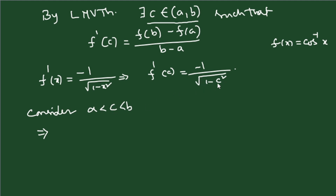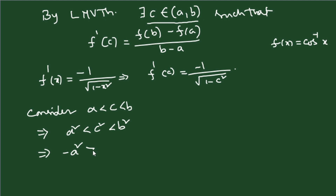Starting from a < c < b, first square all parts: a² < c² < b². Then multiply by −1, which reverses the inequality: −a² > −c² > −b². Now add 1 throughout: 1 − a² > 1 − c² > 1 − b². Take the square root: √(1 − a²) > √(1 − c²) > √(1 − b²).